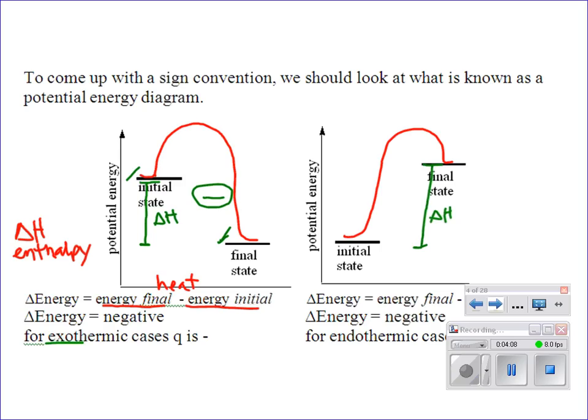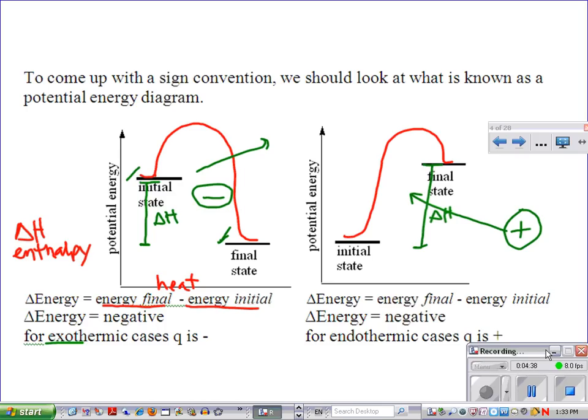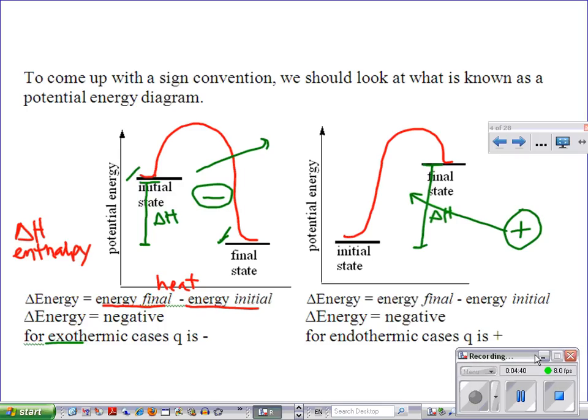And that's exothermic. Here we have a high product state minus low, big number minus small number. How did we get from low to high? Heat entered. A big number minus a small number is positive. This is our endothermic. Any questions on that?